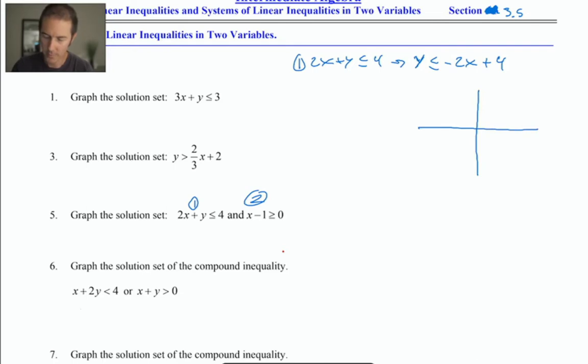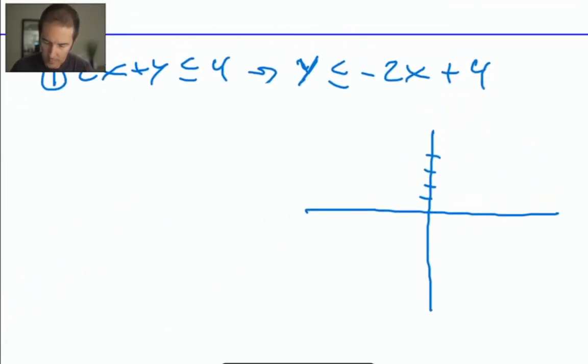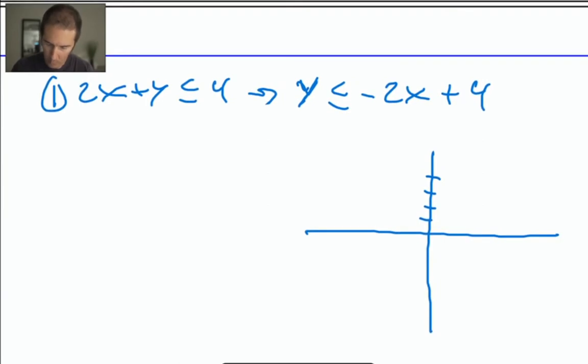It has a y-intercept of positive 4. One, two, three, four. It has a slope of negative 2. So I'm going to rise negative 2, so I'm going to come down 2, and then I'm going to run positive 1. So negative 2 over positive 1. My first point, my y-intercept, was here.